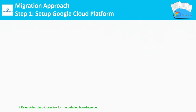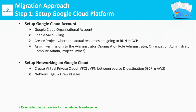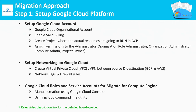Step 1: Set up Google Cloud Platform for migration. Under this step, first you need to create an organizational account with a valid billing, create projects underneath your GCP account, and assign corresponding roles and permissions to your administrator who is going to execute this migration. Second, you need to set up your networking in GCP by creating VPC, VPNs, and firewall rules. Lastly, you need to create a service account and relevant roles for your Migrate for Compute Engine. You can refer to the link given in the video description for each and every step.